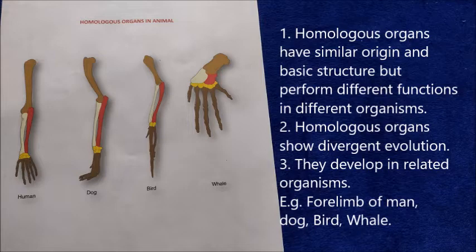In human beings, forelimbs are used to reach items. The dog's forelimbs role is to help with motion. Bird's forelimbs are modified into wings used for flying. Whale's forelimbs act as flippers and operate to stabilize the body. So in all the cases their functions are different, making them homologous organs.